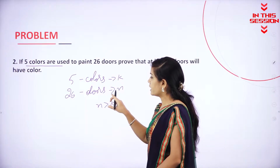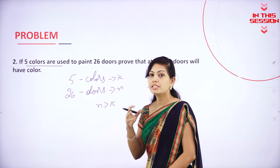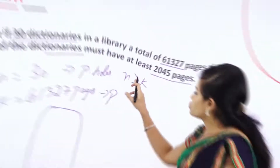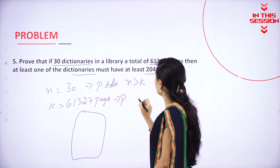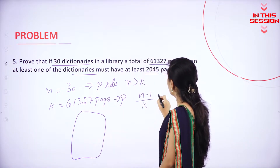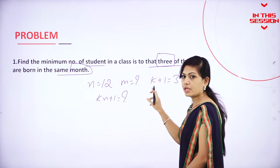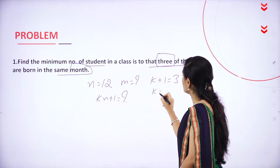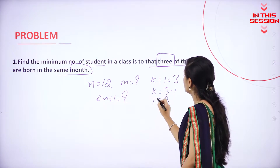The k value is greater than the n value, so you can use the generalized principle. So n is greater than k. If n is greater than k, you can use this formula: n minus 1 by k plus 1. So what is the value of k? k plus 1 is equal to 3, so k is equal to 3 minus 1, which is 2.